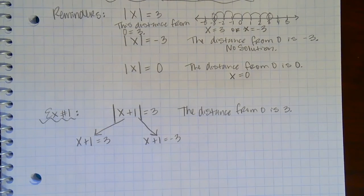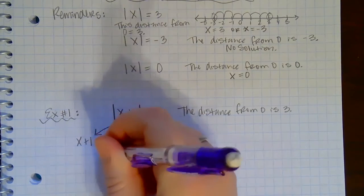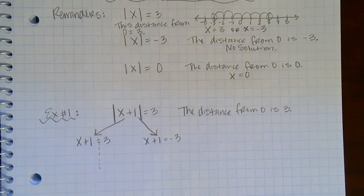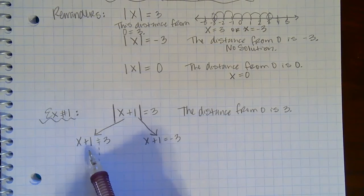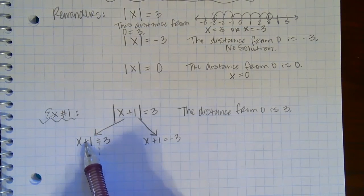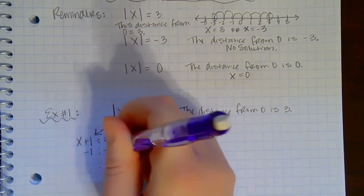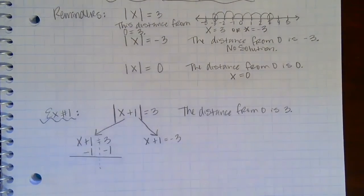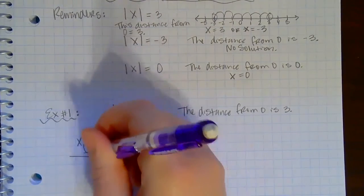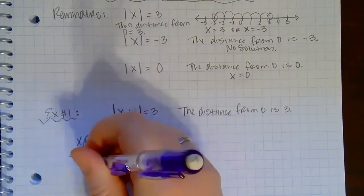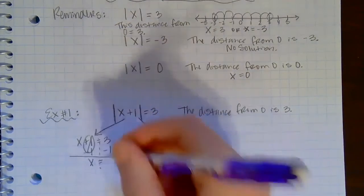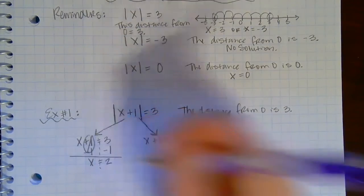Either way. Okay, and then I'm just going to solve like usual. So over here I'll draw my line down my equal sign. I need to get x by itself, so I ask what's on the same side as the x, and it's a 1. It's being added, so the opposite of adding 1 is subtracting 1. Subtract 1 from both sides. Plus 1 minus 1 is 0. Bring down the x. 3 minus 1 is 2.